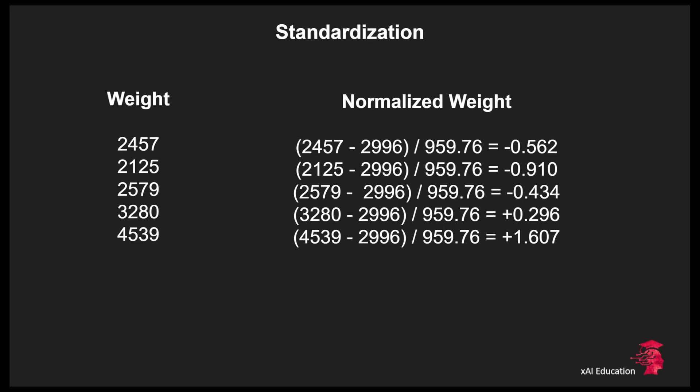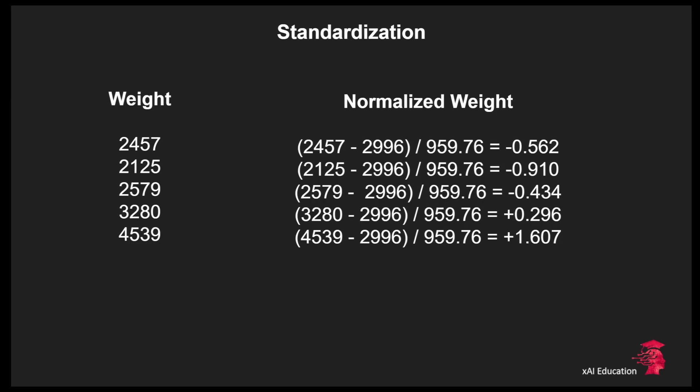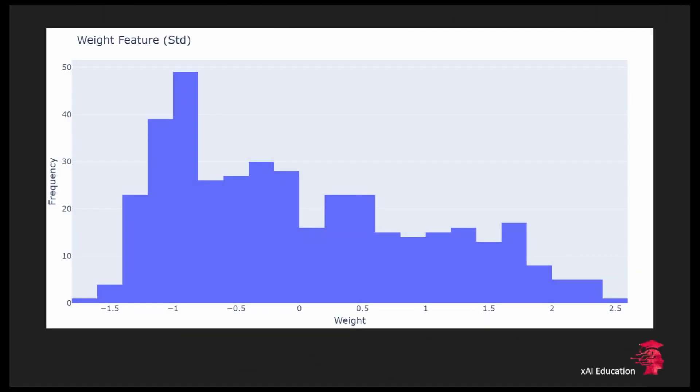Applied to our weight feature we get the following distribution. One thing that you can remember is that if your feature is following a normal distribution then the z score will also follow a normal distribution. Otherwise we can observe some distortions in the distribution.